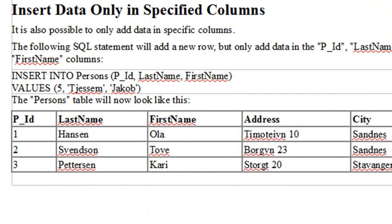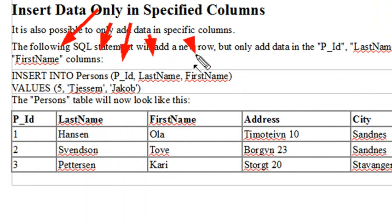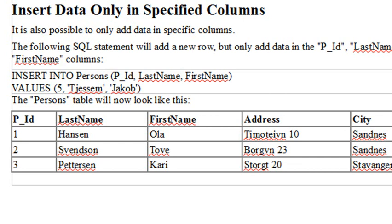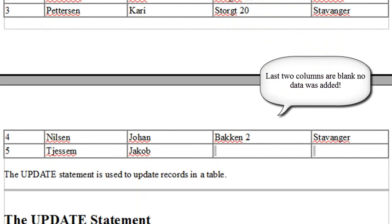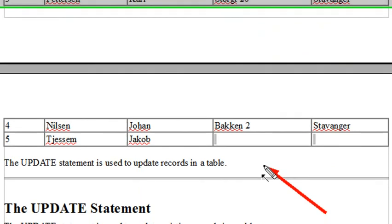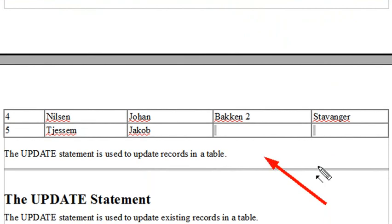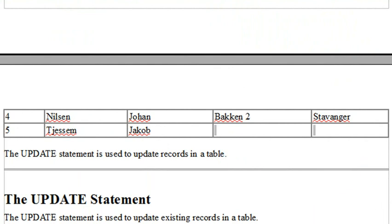We can also specify the columns we insert into. In this case, we INSERT INTO persons specifying the ID, last name, and first name columns — leaving the last two columns blank for this insertion. We put in the value 5 for the ID, and you can see that last row is exactly what we get, with the address and city columns left empty.